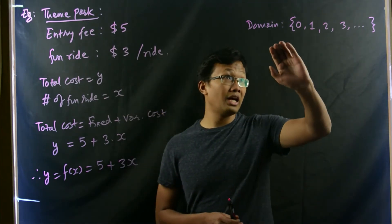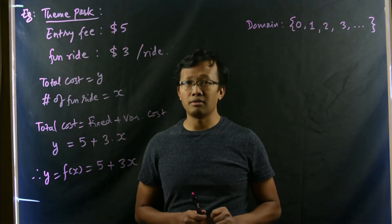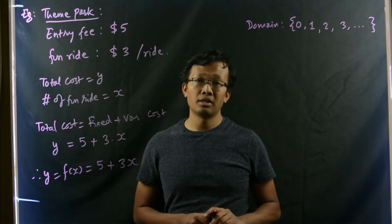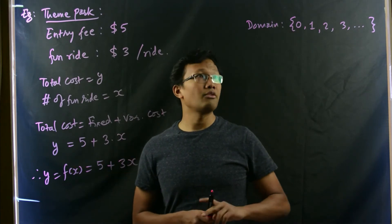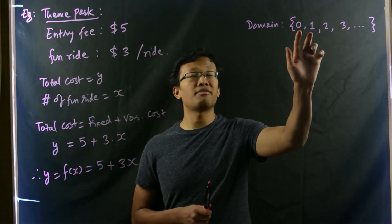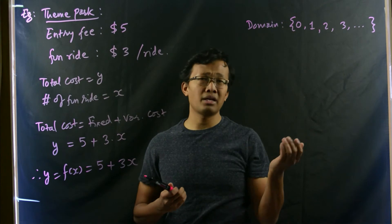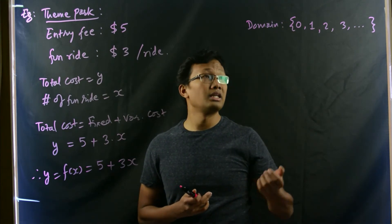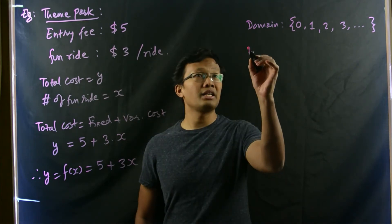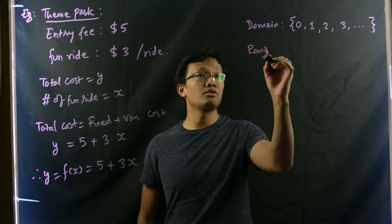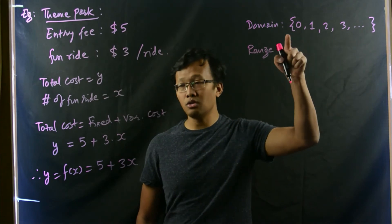Now, let me ask you. I wrote down this as fun ride. Can we go for negative number of fun rides? Of course not. And can we go for, let's say, 0.5 fun ride? Well, that might not be possible. Or 2.75 fun rides. That may not be possible.